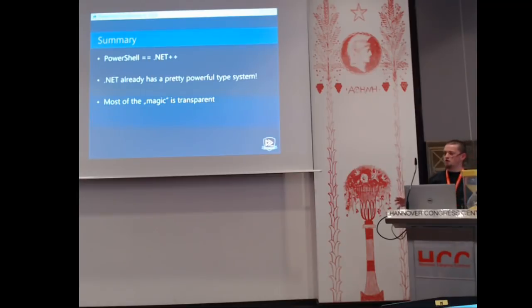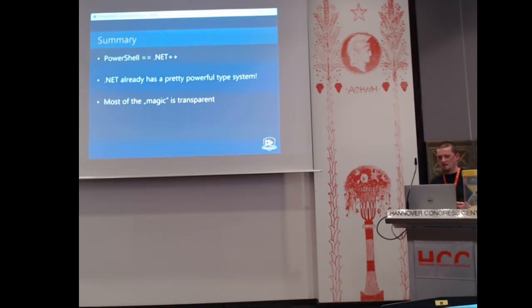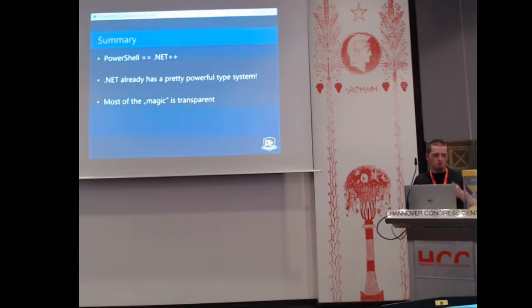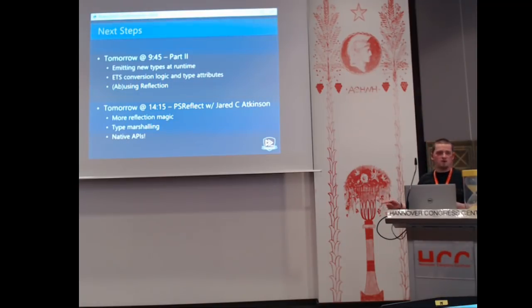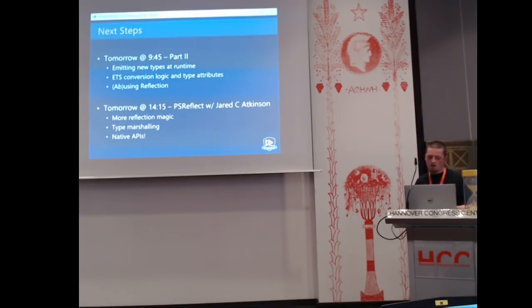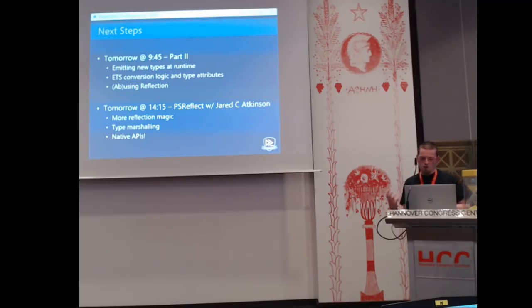This was basically an introduction to what the .NET common type system is, what the PowerShell extended type system is, and what it covers. As I hope to have shown, PowerShell is kind of .NET-plus-plus — it adds a bunch of functionality on top of the existing type system in .NET, which is already pretty powerful. Most of this magic is transparent to you — most of you might not have noticed the whole dollar profile thing going on in the background. Tomorrow I'll have a longer session with more demos: we're going to look at emitting new types at runtime without precompiling code, how the ETS employs conversion logic to convert between types without you noticing, and what static typing looks like in PowerShell.